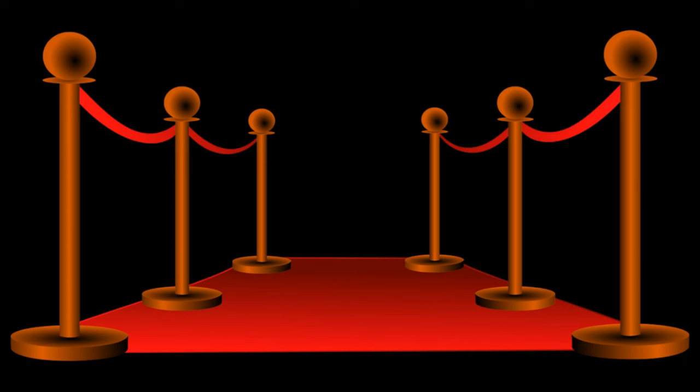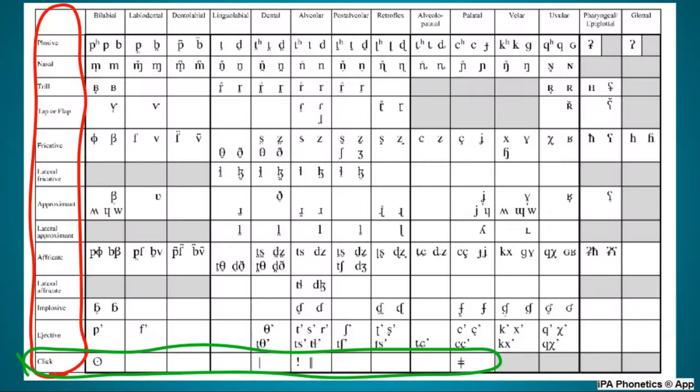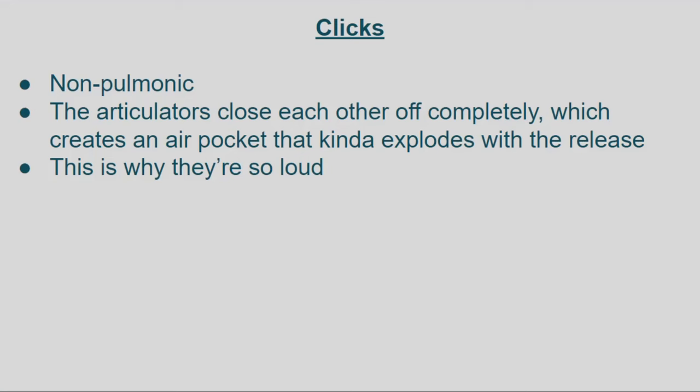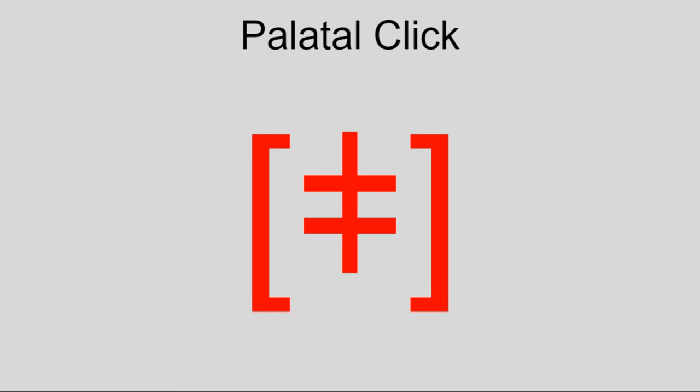And finally, arguably the most famous non-pulmonic consonants: the clicks. Clicks are made by closing the mouth off at multiple points, creating an air pocket that then sort of explodes when you release the sound, which is why they're so loud. Sorry, you probably didn't hear me doing that.